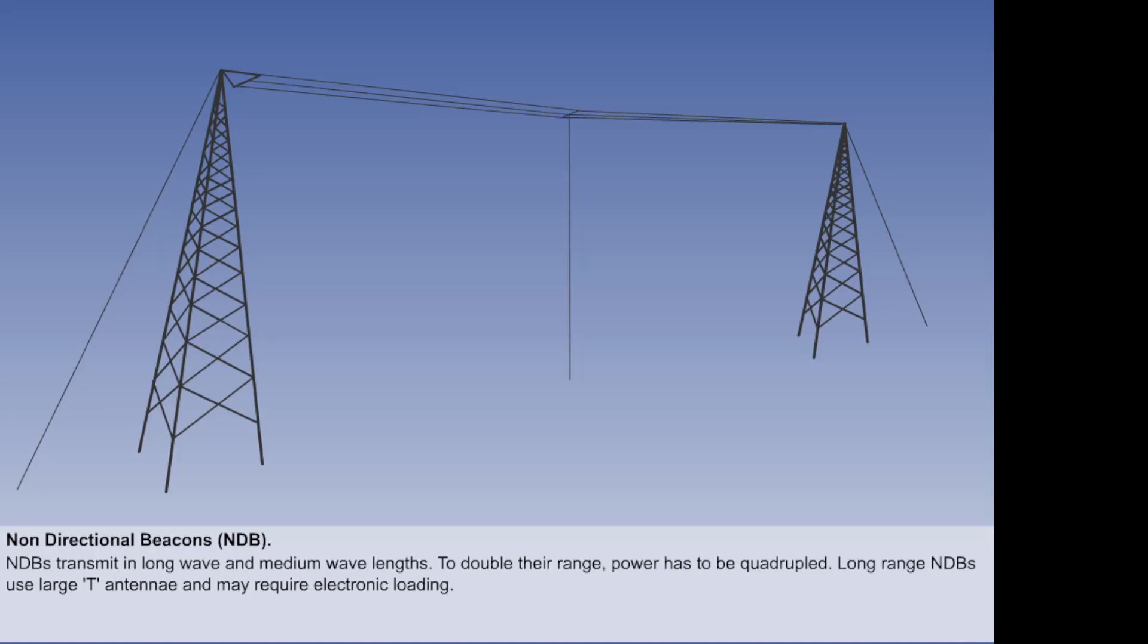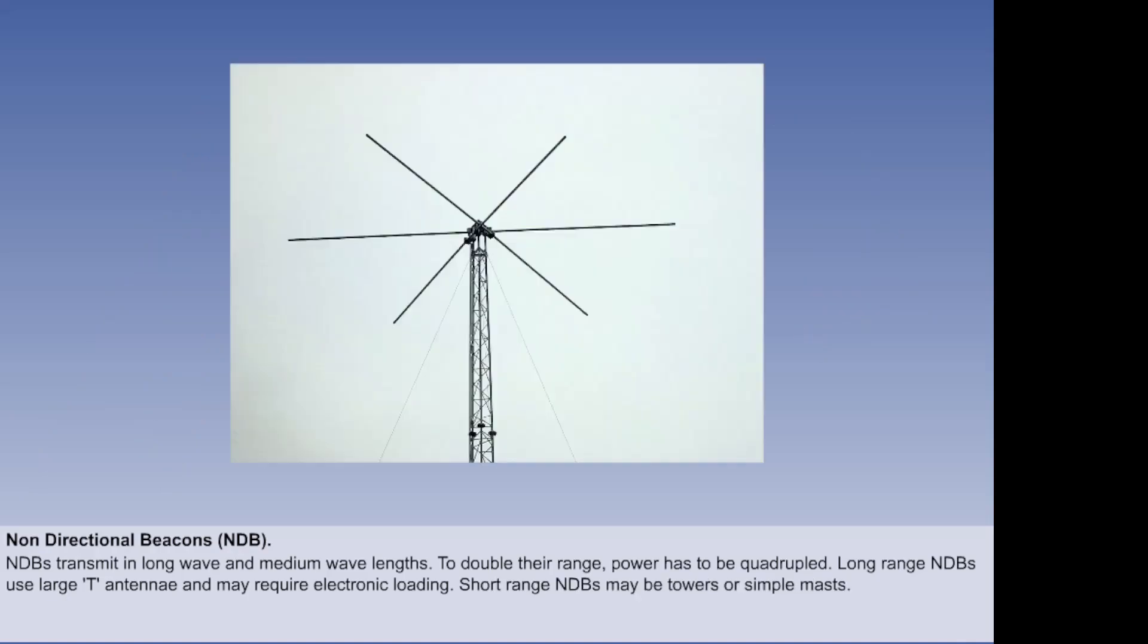You will recall that masts are ideally half the size of the wavelength, but this is unrealistic for long wave transmissions, so some electronic loading is necessary. Short range NDBs are fairly small towers or simple masts. They are insulated from the ground, and this doubles the effective length of the antenna because of the reflective nature of the earth upon the NDB ground waves.